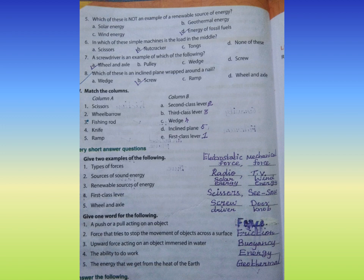Number five: Which of these is not an example of a renewable source of energy? Answer D, energy of fossil fuels. Number six: In which of these simple machines is a load in the middle? Answer B, nut cracker.